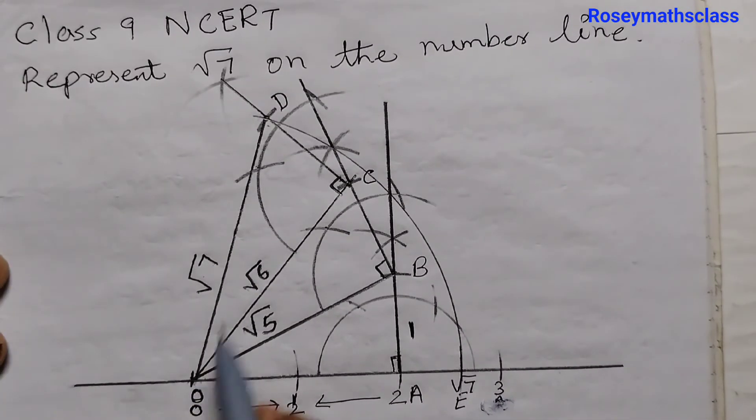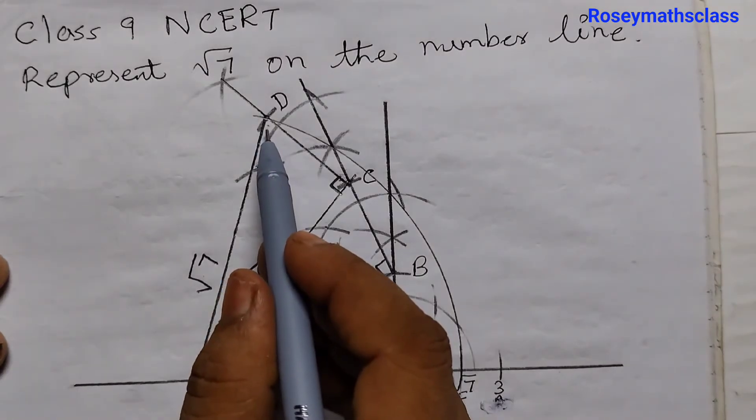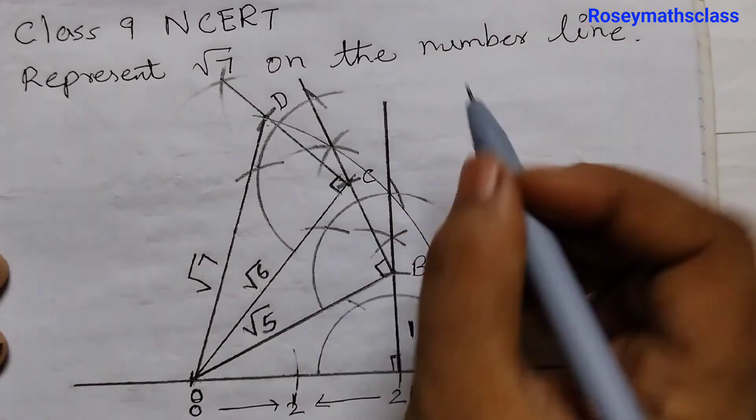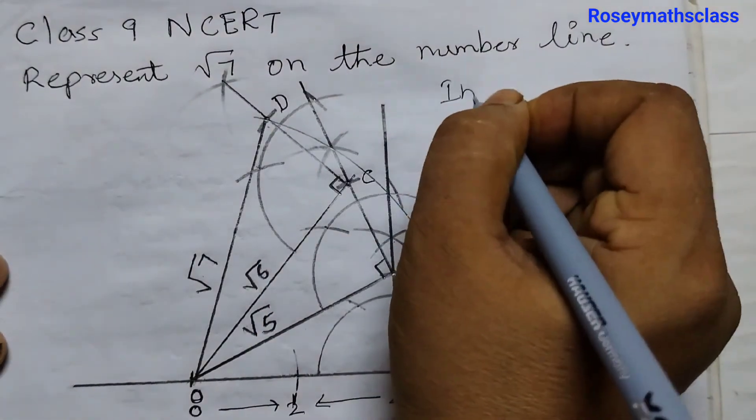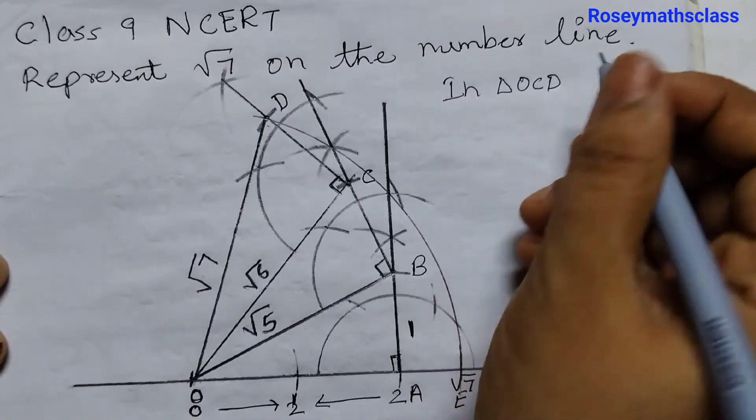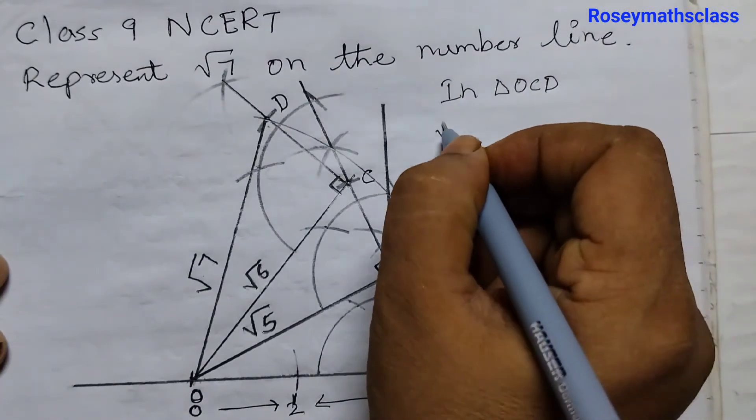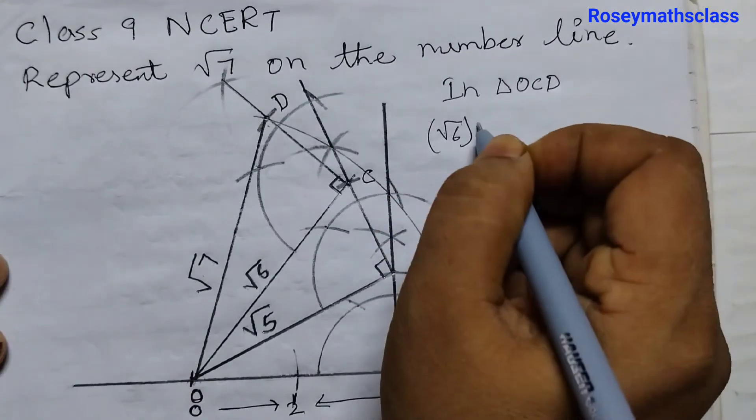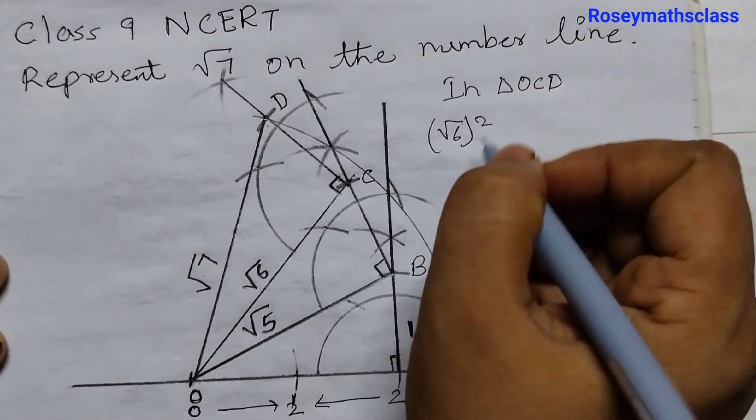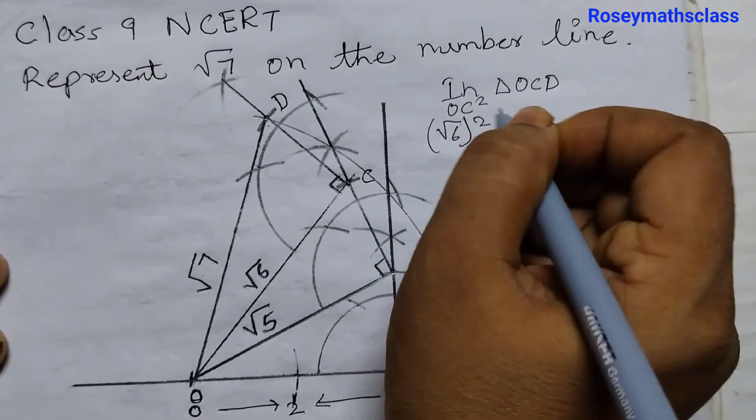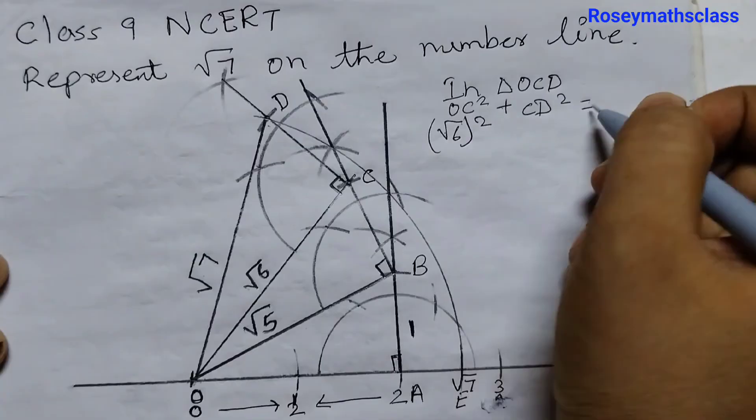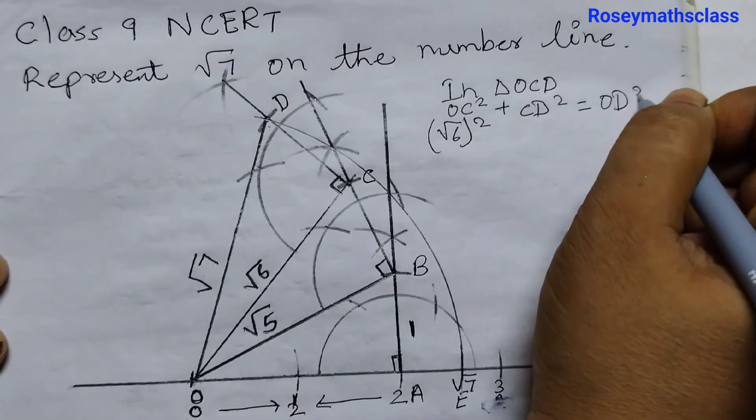Now let's see how O, D is equal to square root of 7. Take this triangle O, C, D. So in triangle O, C, D, using Pythagoras theorem, square root of 6 squared. Square root of 6 is O, C. Or we can write first like this. O, C squared plus C, D squared is equal to O, D squared.